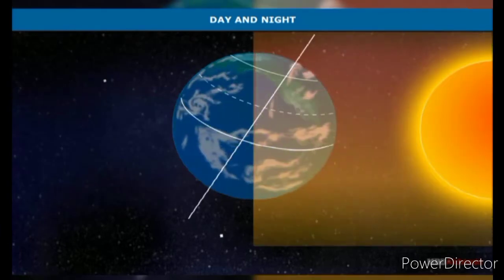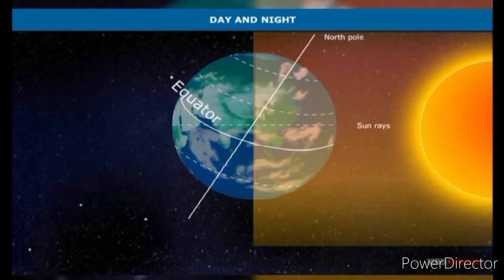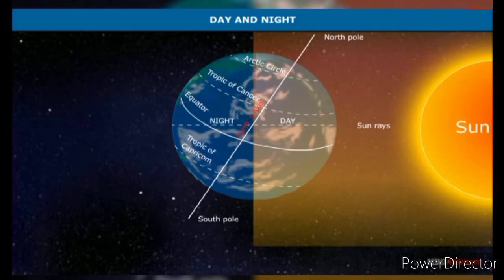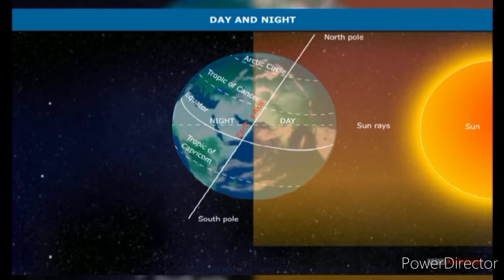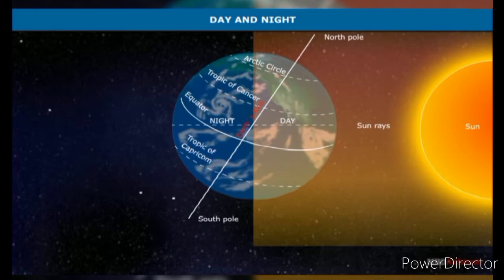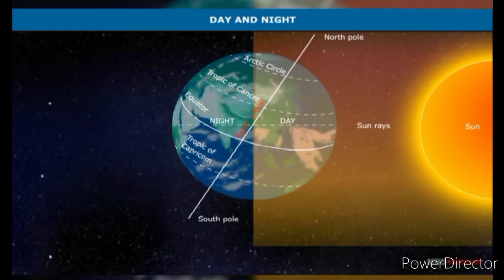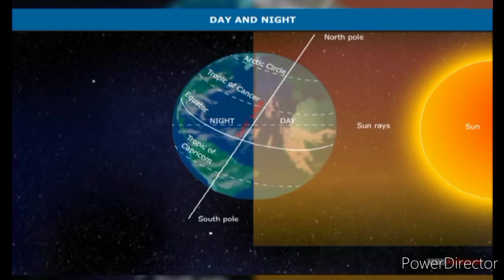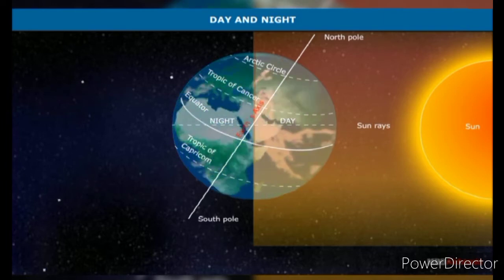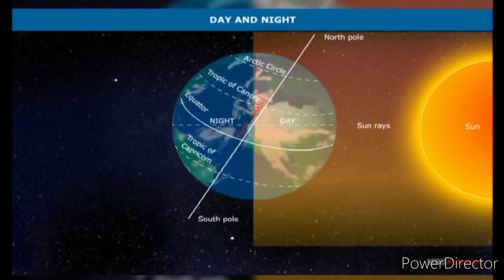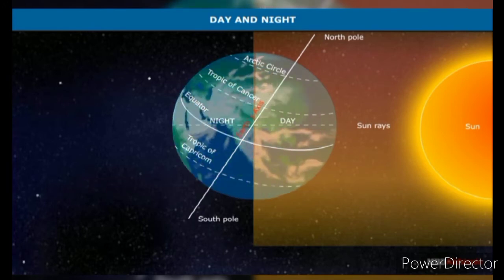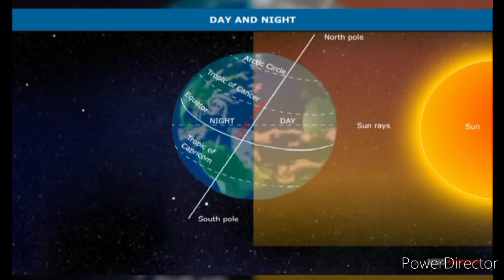This early period of the day is known as dawn. As the day advances, the sun is seen overhead — this period is called midday or noon. When the sun is seen over the horizon, there is again a period of near darkness called twilight, which is known as dusk.